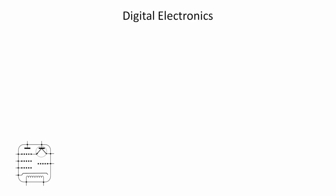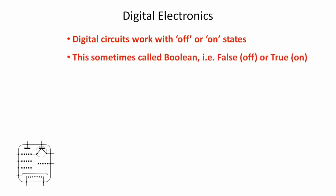Okay, we're going to start by looking at a few principles of digital electronics. Firstly, digital circuits work with either off or on states, and that's how they differ essentially from analog circuits. Sometimes this is called Boolean, i.e. false or true, where false is off and true is on.